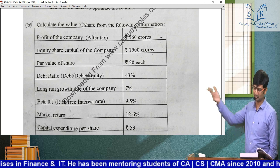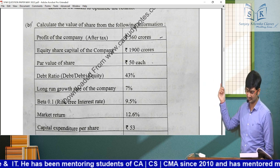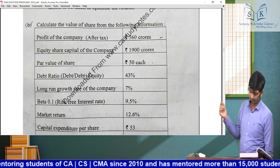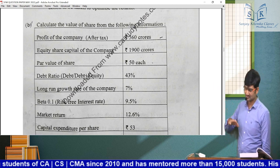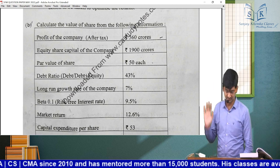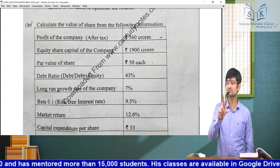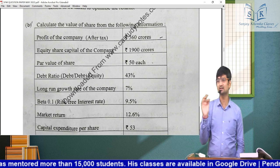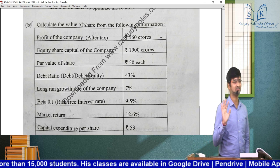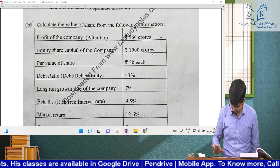There were typical ICAI patterns — beta 0.1, risk-free interest rate 9.5%, and so on — ditto sums again. Generally, there are two similar-type sums in ICAI MAT and in teachers' MAT materials.